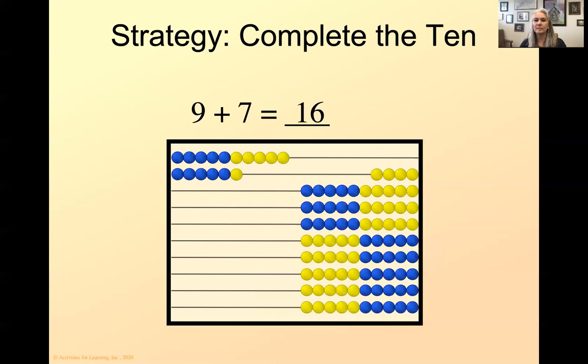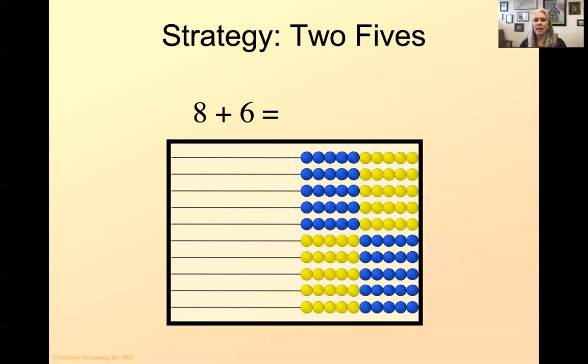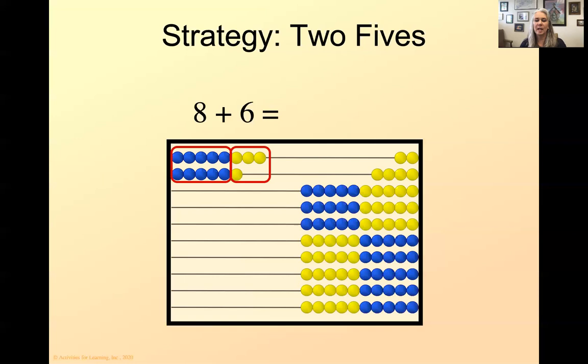This next strategy is my personal favorite. This is the two, five strategy, eight plus six. I've got eight on the first row, six on the next. Before I do anything, can you see the answer? Look at the blue beads. How many are there? There's 10. How many yellow beads? Four. There's our answer. 10, four, or 14. Isn't that just super cool? You can see it. Let's do another one here. Let's do seven plus five. And those of you that are quick with patterns, you can immediately see I've got 10 and two more. Seven and five is the same thing as 10 and two.